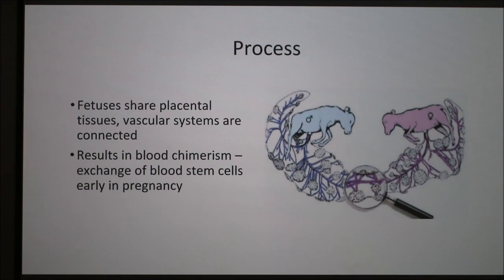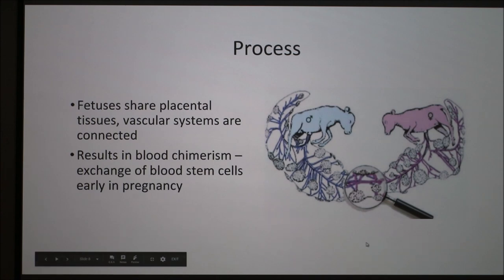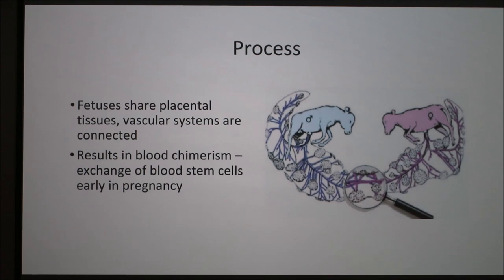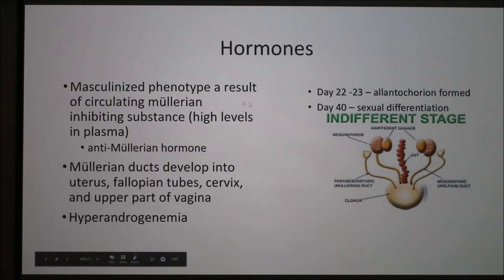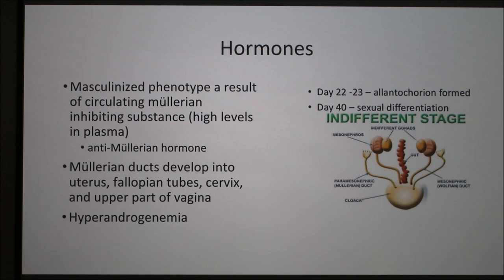The process of how a female becomes a freemartin: it has a twin male in the womb and they share placental tissues — their vascular systems are connected. This results in blood chimerism, which is when blood stem cells are exchanged early in pregnancy. The female ends up with male reproductive blood stem cells. Then Müllerian inhibiting substance passes to the female, causing a masculinized phenotype. The Müllerian ducts, which develop into the uterus, Müllerian tubes, cervix, and upper part of the vagina, are inhibited if the twins share blood stem cells before day 40, causing suppression of this development so they don't form correctly or don't form at all.